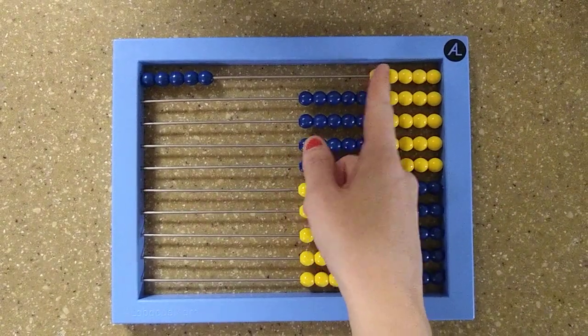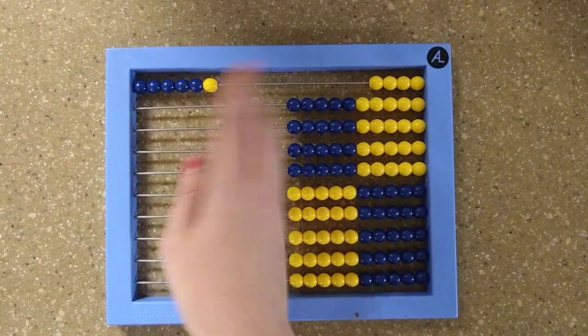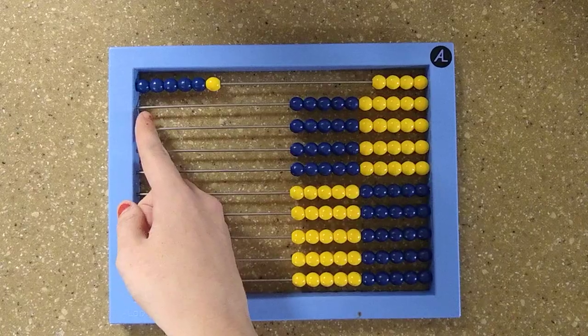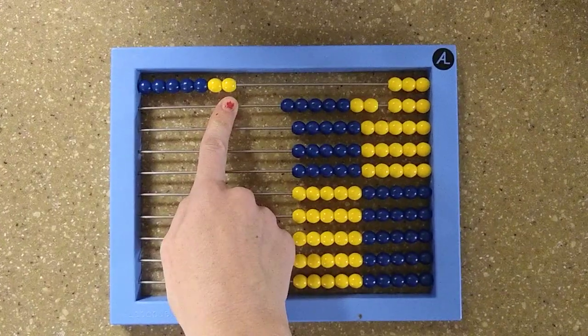And then when you want to help them subitize larger numbers on the abacus, they just memorize that this is five and one is six. So they know all the blue beads and one yellow bead, that's six. All the blue beads and two, that is seven.